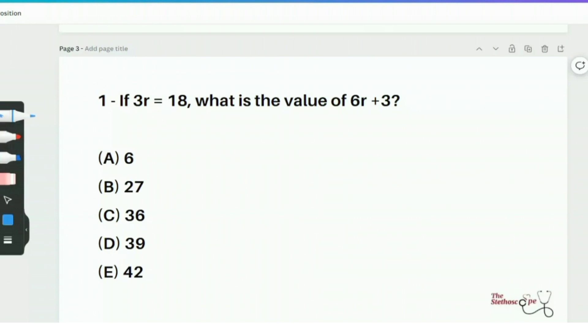So we are given that 3r is equal to 18. And to get the value of r, we have to divide it by 3 on both sides, or simply we'll move 3 from left to the right side. And here we get r is equal to 6. Now we can plug this r value in our given equation. That's 6r plus 3. So it gives 6 times 6 plus 3, that's 36 plus 3, that's equal to 39. So the right answer for this question is option D, which is 39.